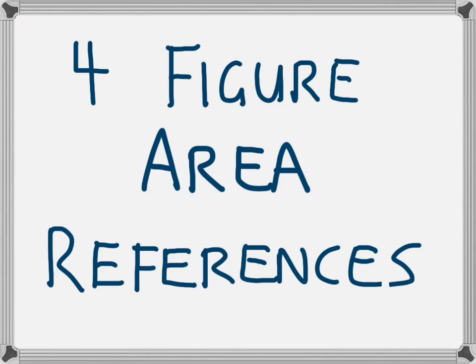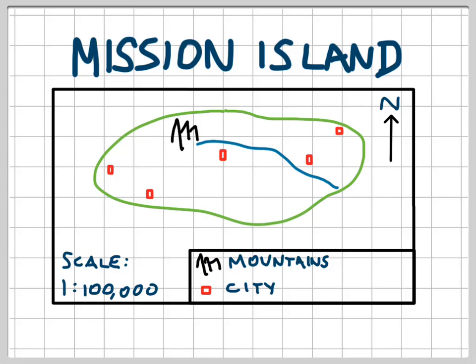In this video we're going to look at how to do a four-figure area reference, which is going to help us to locate points on a map. If you watched the video about the elements of a map, you would have seen this map of Mission Island before. Now we've put a grid on it, and it's going to help us to locate specific places that are on this map.